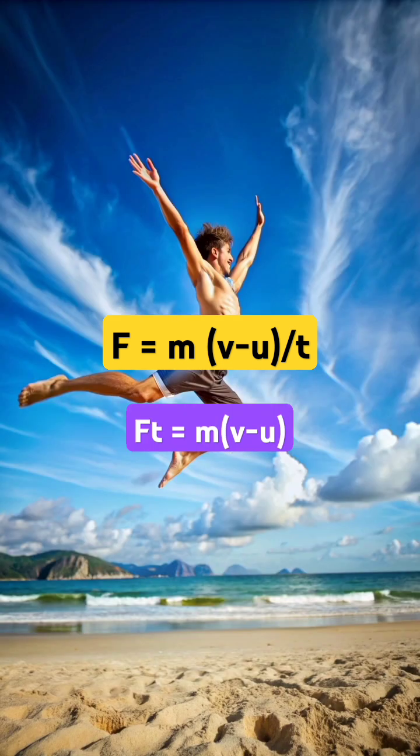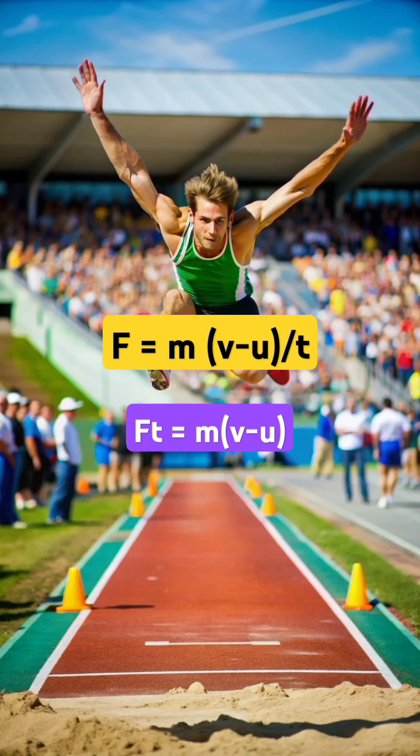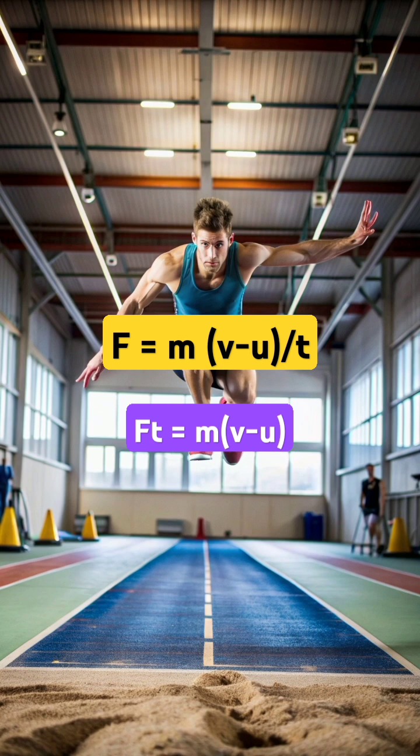From Newton's second law we have learnt F is equal to m into v minus u by t. Here u is our initial velocity, v becomes zero.